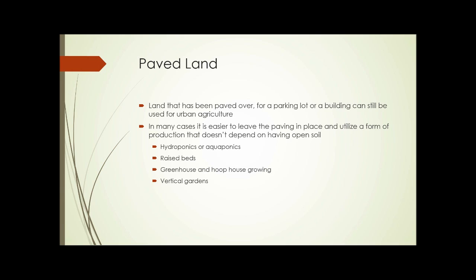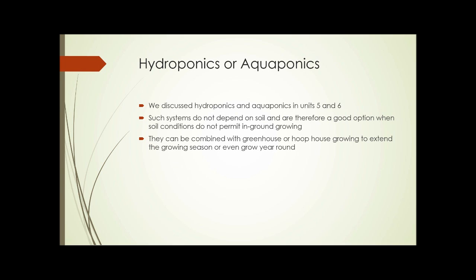Let's take a look at land that's unsuitable for agriculture because it's paved. We find a nice plot of land, however it's been paved for a parking lot or it has a building foundation on it. In many cases, it's easier just to leave the paving in place and utilize a form of production that doesn't depend on having open soil — hydroponics or aquaponics, raised beds, greenhouse and hoop house growing, or vertical gardens. Such systems don't depend on soil and are therefore a good option when soil conditions don't permit in-ground growing. They can be combined with a greenhouse or hoop house to extend the growing season or even grow year-round.